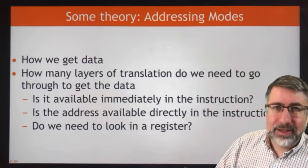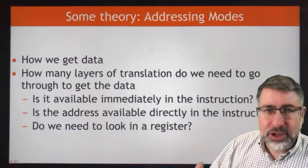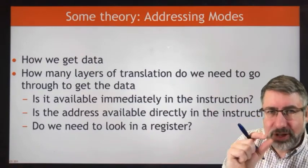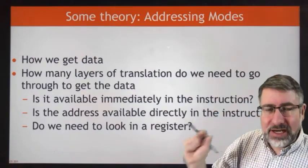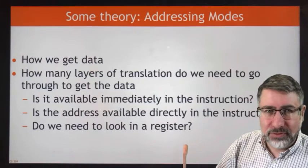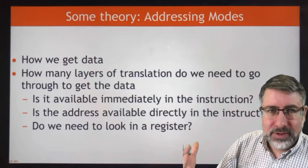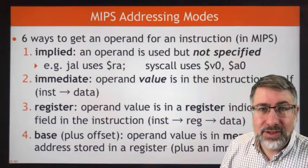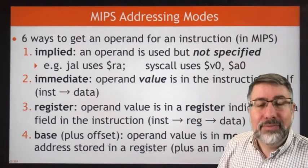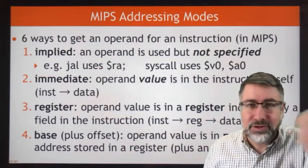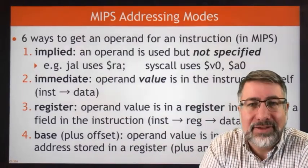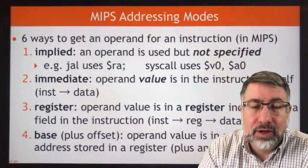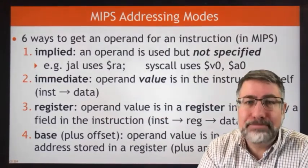How do you get data? How many layers of translation do you need to get from the thing specified in the instruction to the data presented to the ALU? We have six different ways, and these are all familiar to you — we just haven't had the specific language for them. The first way is called implied.